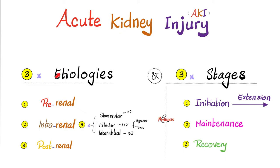Acute kidney injury: three causes, three stages. The three causes are pre-renal, intrarenal, and post-renal — the most common being pre-renal. Intrarenal causes can involve the glomerulus, the tubule, the interstitium, or the renal vessels. Tubular causes are either hypoxic — not receiving enough blood — or toxic — being damaged by a toxin such as a drug, heavy metal, or radiocontrast dye.